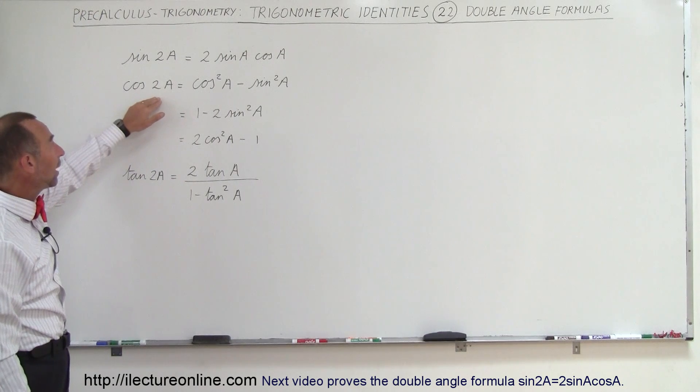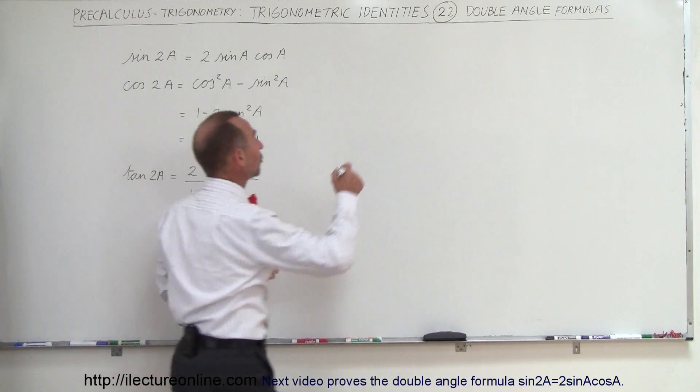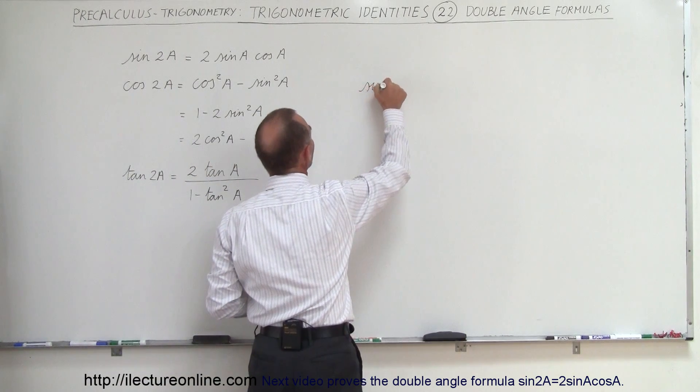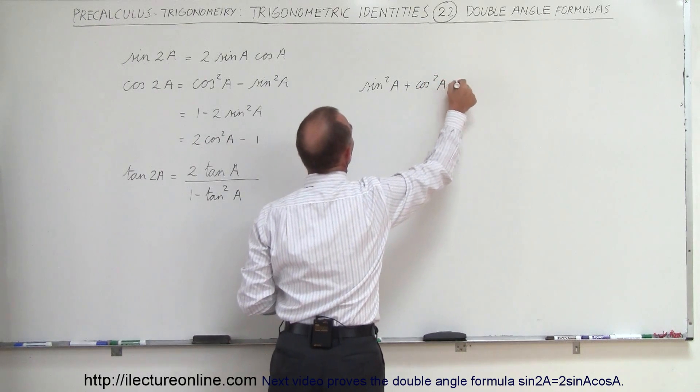Here, the cosine of 2A is equal to cosine squared of A minus sine squared of A. Now remember, since you also know that sine squared of A plus cosine squared of A is equal to 1...